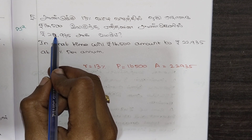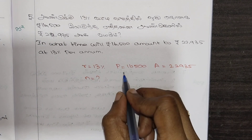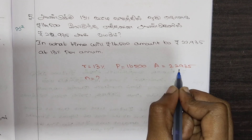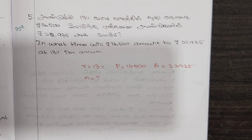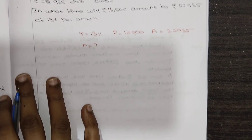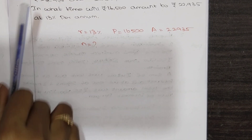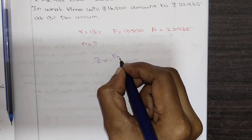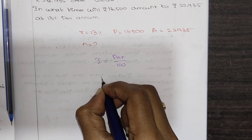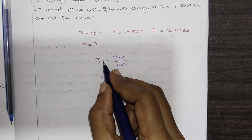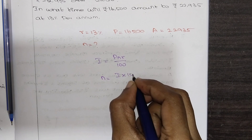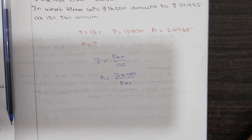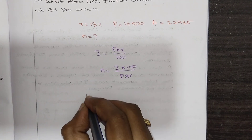Our aim is to get the amount of 22,000. We choose our version which is 5-1-10. The formula is I equal to PNR by 100. When we solve for N, we get N equal to I×100 divided by P×R.